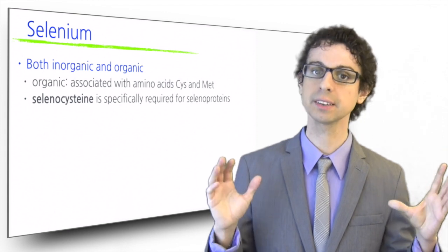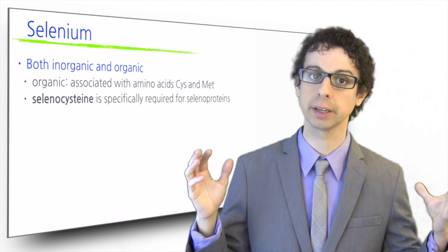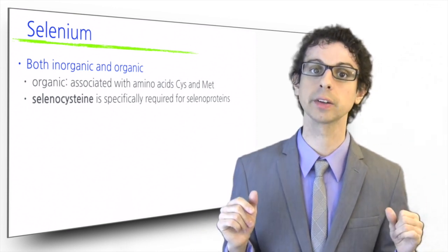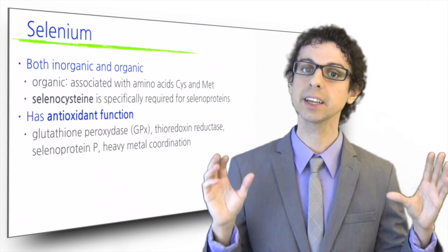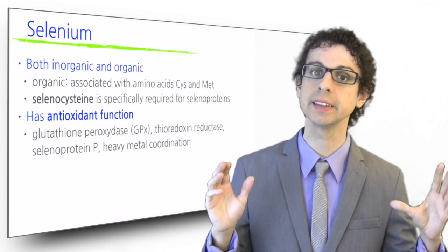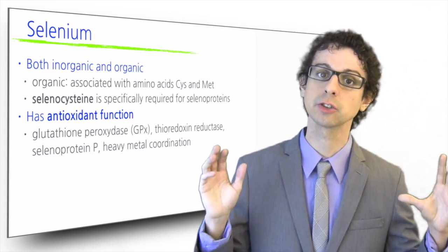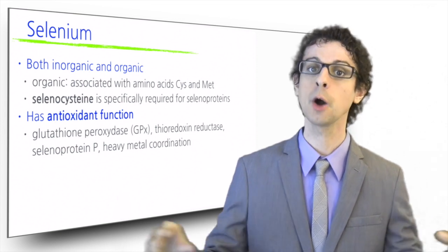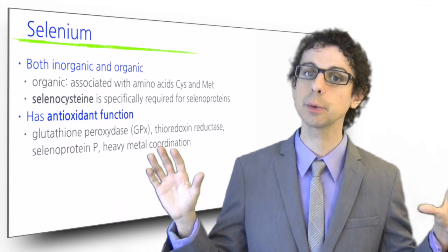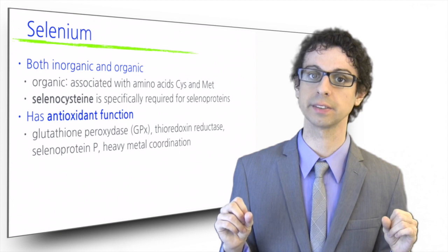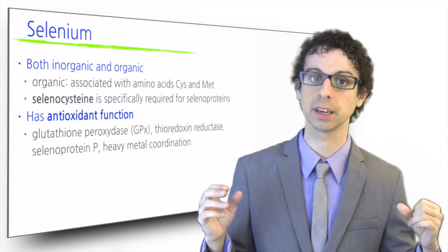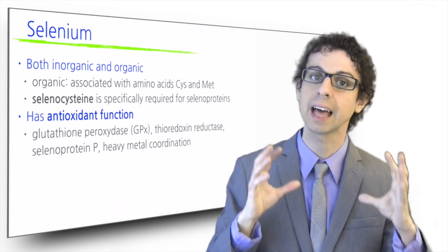A class of proteins synthesized by our body called selenoproteins specifically requires selenocysteine as one of the amino acids along their chain. Selenium is one of the antioxidant minerals together with zinc, copper, and manganese. Its antioxidant activity is primarily exerted through selenium-dependent glutathione peroxidase, one of our three major endogenous antioxidant enzymes. Other selenoproteins are also involved in antioxidant defense, such as thioredoxin reductase, which regenerates the antioxidant thioredoxin, and selenoprotein P, which chelates heavy metals.